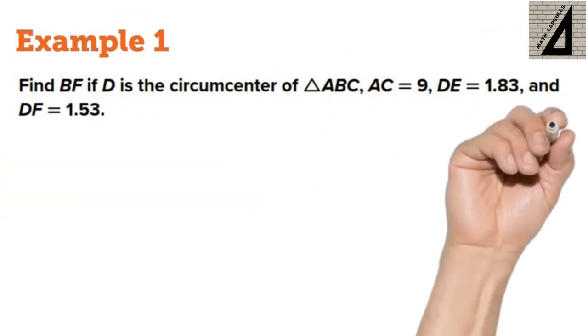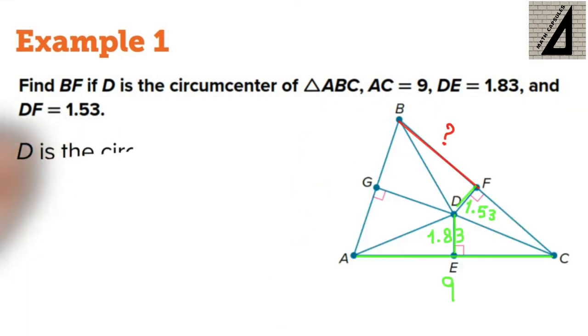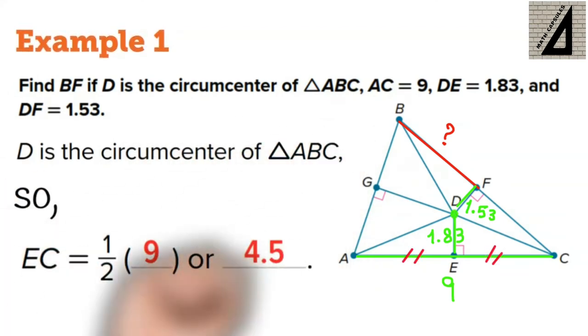Find BF if D is the circumcenter of triangle ABC, where AC equals 9, DE equals 1.83, and DF equals 1.53. So, because D is the circumcenter of triangle ABC, this means that EC equals half times 9, or half AC, which is 4.5.